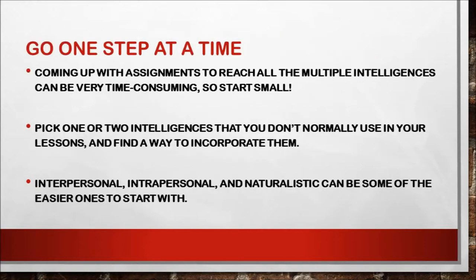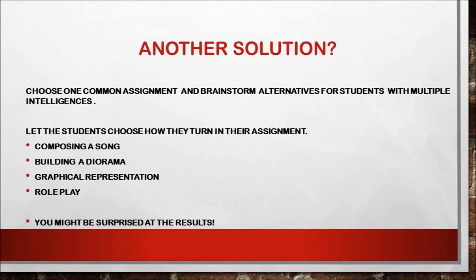Go one step at a time — coming up with assignments to reach all multiple intelligences can be very time consuming, so start small. Pick one or two intelligences you don't normally use in your lessons and find a way to incorporate them. Interpersonal, intrapersonal, and naturalistic intelligences can be some of the easier ones to start with. Another solution: choose one common assignment and brainstorm alternatives for students with multiple intelligences. Let students choose how they turn in their assignment — they could compose a song, build a diorama, make a graphical representation, or do a role play. You might be surprised at the results.